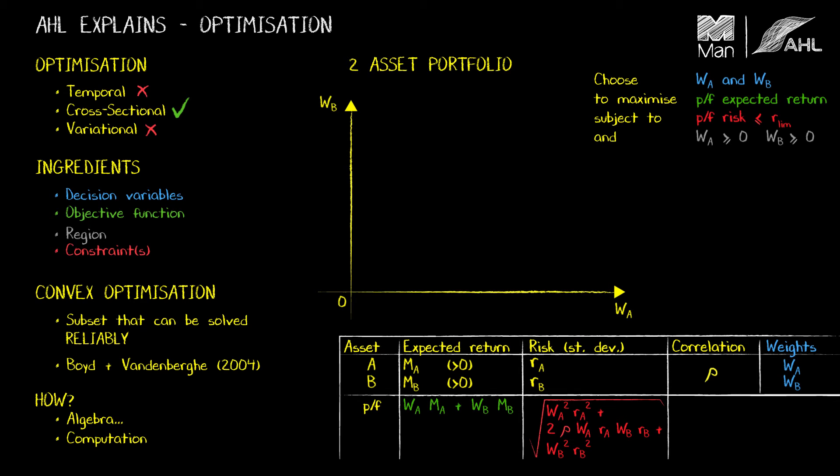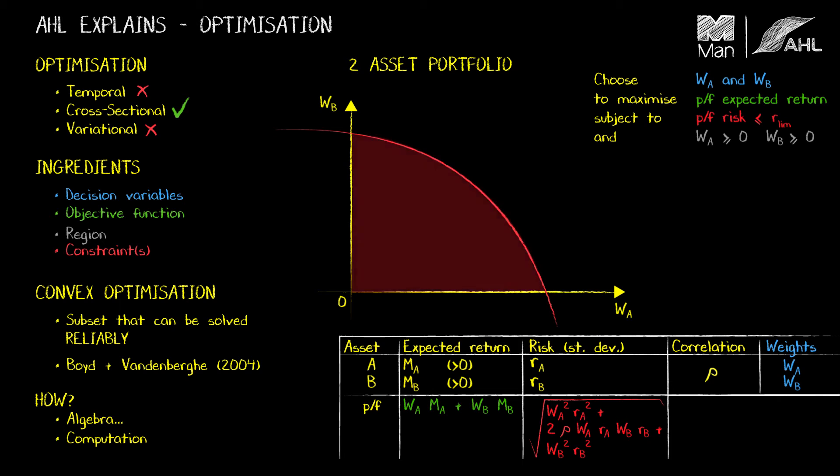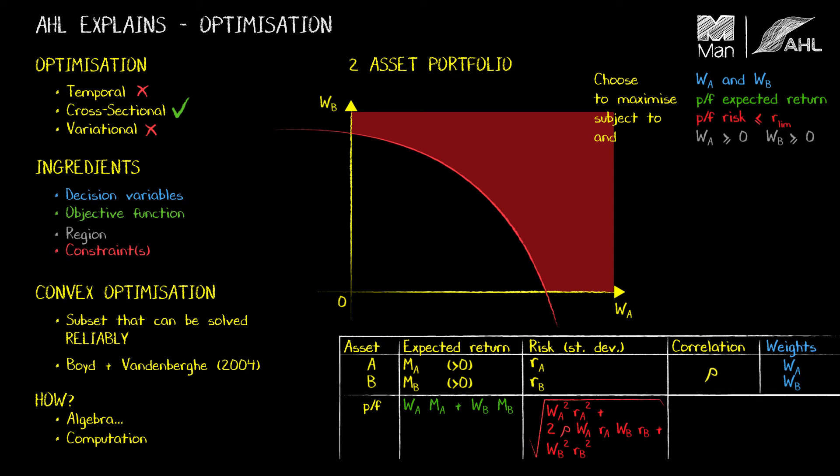The next thing I'm going to look at is the risk constraint. Well, this risk constraint actually corresponds to an ellipse. And I'm not going to draw the whole ellipse here. I'm just going to draw this section of it because I'm only interested in this quadrant. So any point on the inside or on the surface of this ellipse corresponds to a portfolio that satisfies this risk constraint. And anything that is outside that risk ellipse corresponds to a portfolio that will violate the risk constraint and is therefore illegal to us.